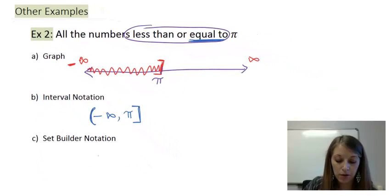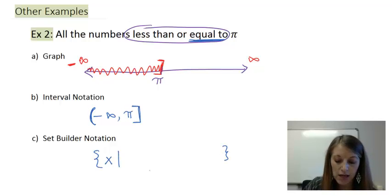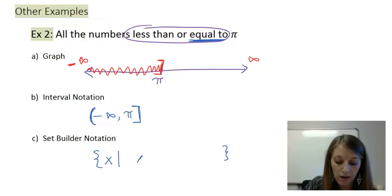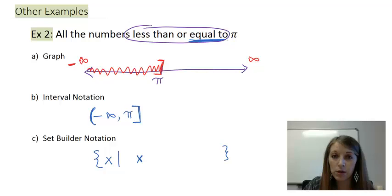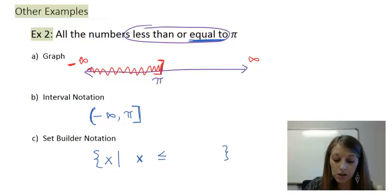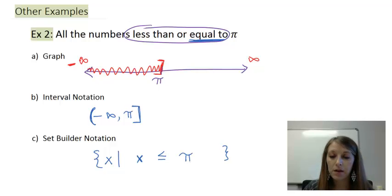Last but not least, set builder notation. Start with braces, then X such that. I only have one inequality, so I always put my variable on the left. The symbol is less than or equal to. Remember: if you're shading to the left, your inequality symbol should be pointing to the left. Then the number in question, which is pi. That finishes the set builder notation as well as the other notations for this example.